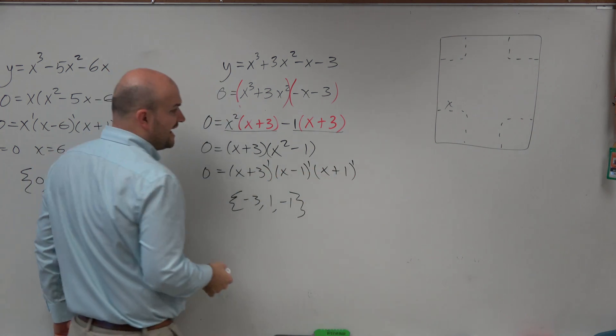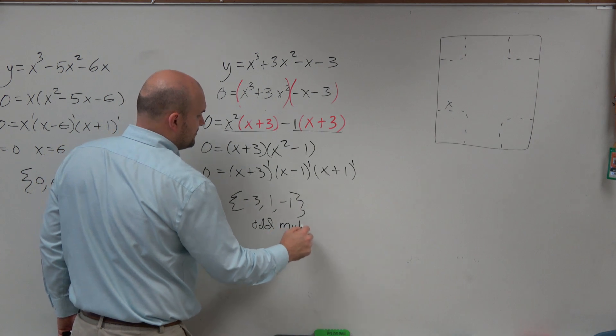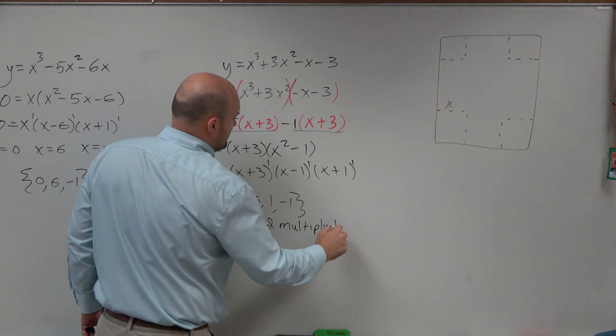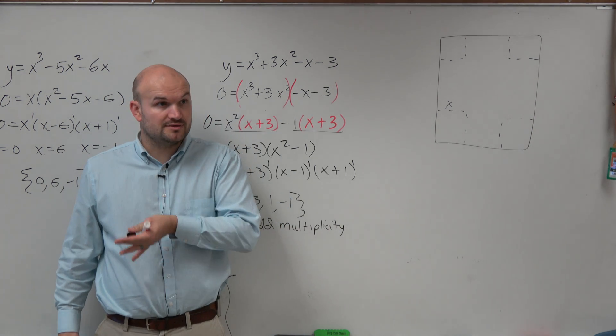Notice that the multiplicity is odd for all of those. So they all have an odd multiplicity. And remember, odd multiplicity will say that the graph will cross at each one of those, right?